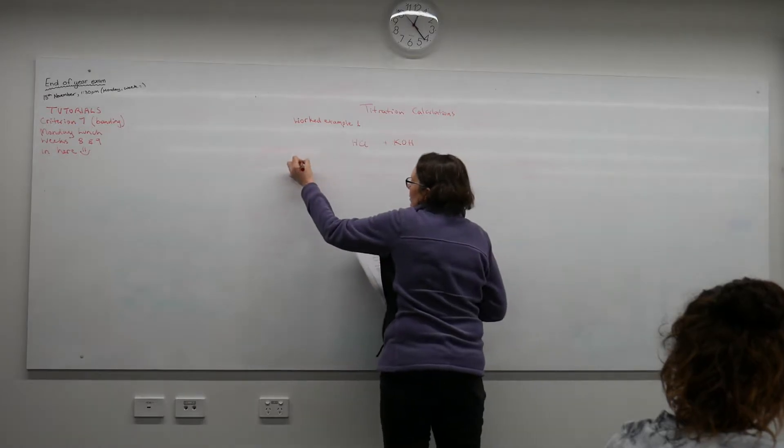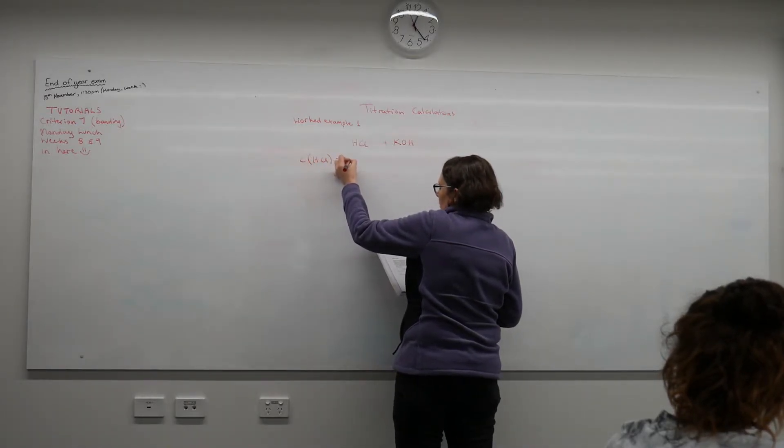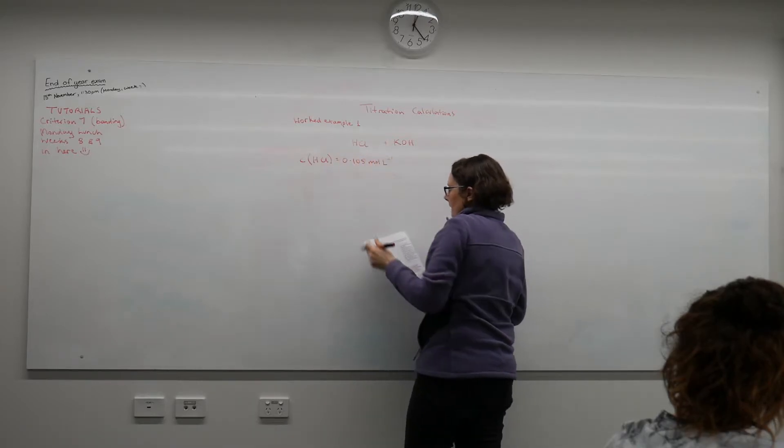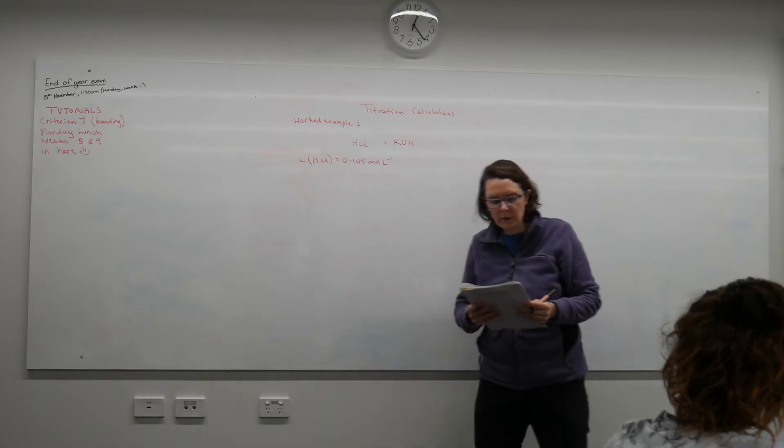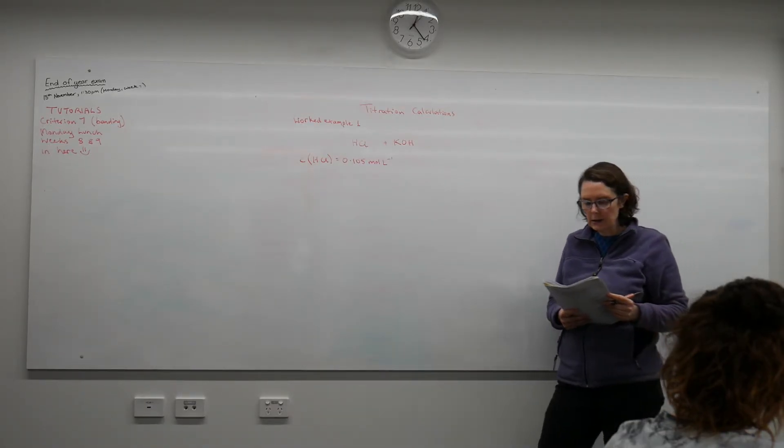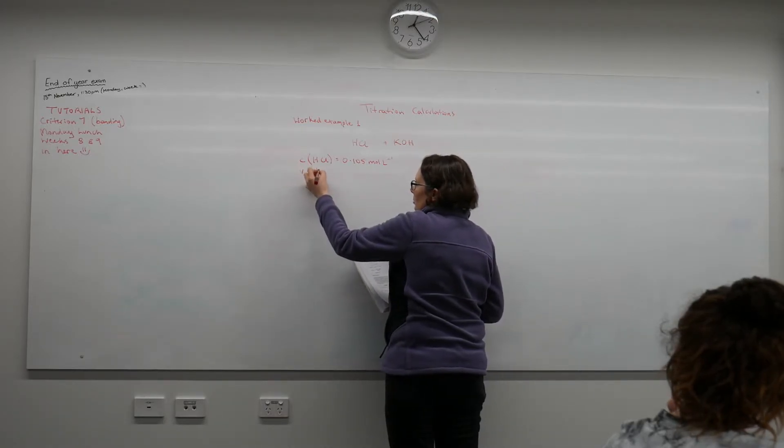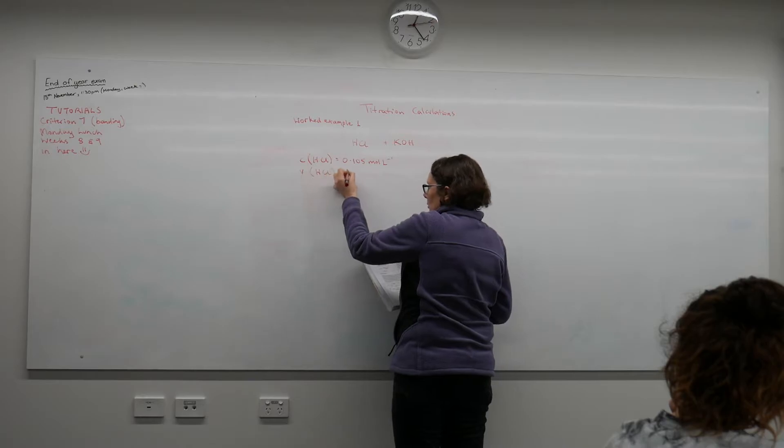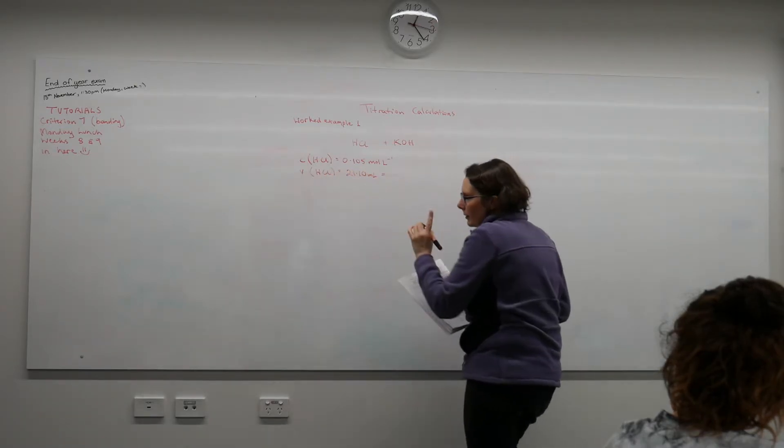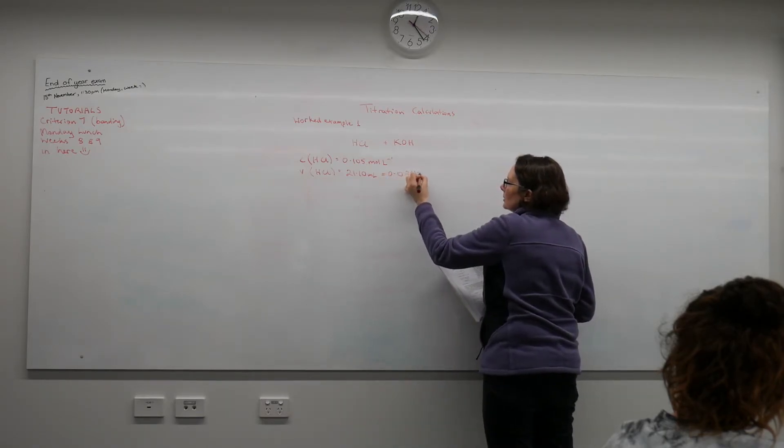Our concentration of the hydrochloric acid is 0.105 moles per litre. And it says on average 21.10 mL of hydrochloric acid is needed. So our volume of hydrochloric acid is 21.10 mL, which we know we have to convert to litres: 0.02110 litres.